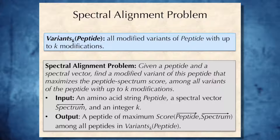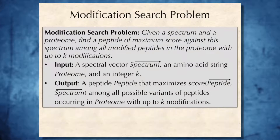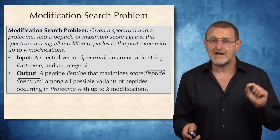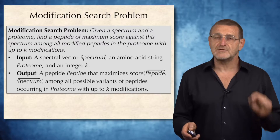Of course, there is a very simple solution to this problem — we simply check all possible peptides in the variance-k peptide set and see which has the maximum score. But this will be too slow, because our more ambitious goal is to solve the modification search problem: given a spectrum and a proteome, find a peptide of maximum score against this spectrum among all modified peptides in the proteome with up to k modifications. To efficiently solve the modification search problem, we need a very fast algorithm for solving the spectral alignment problem.